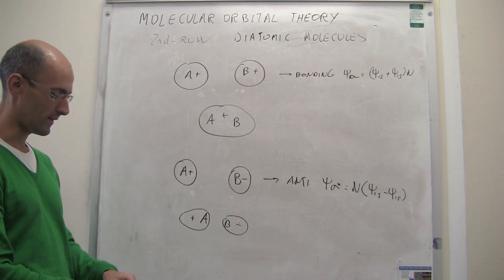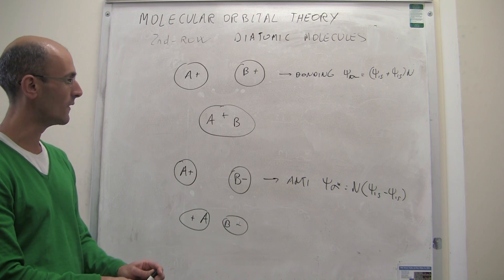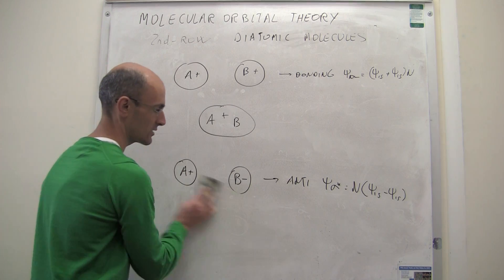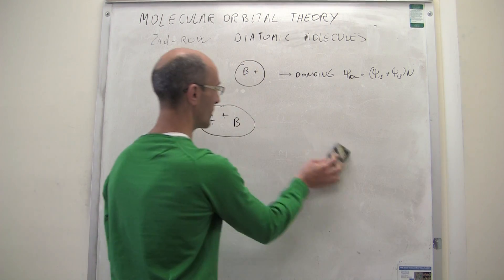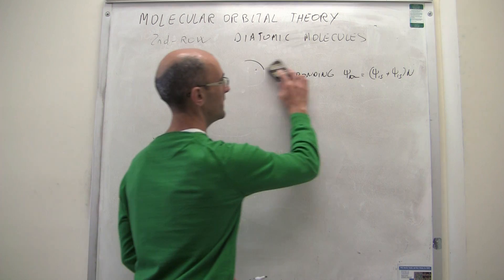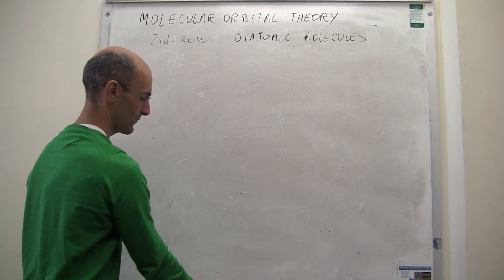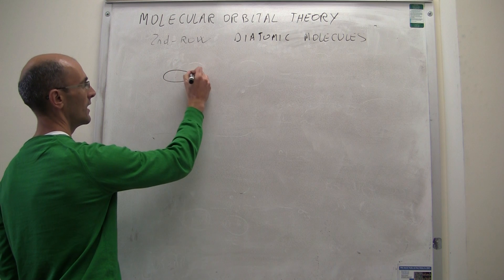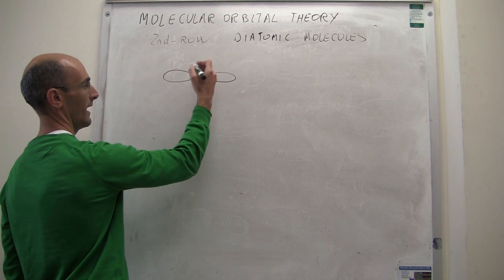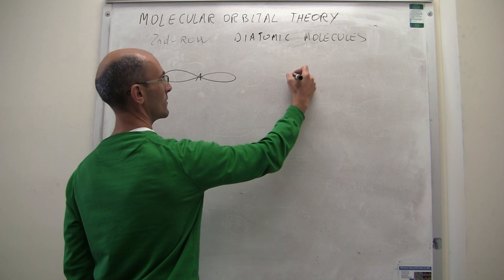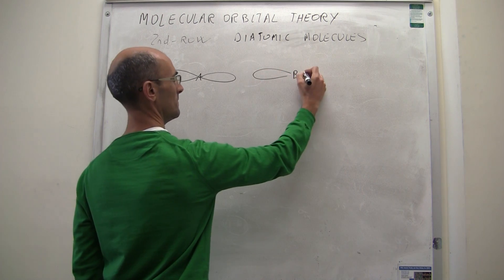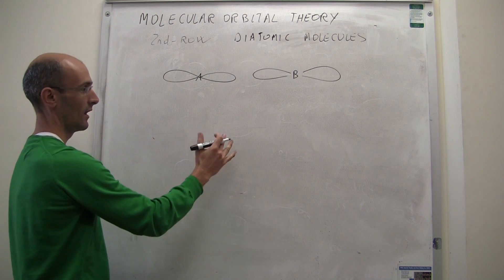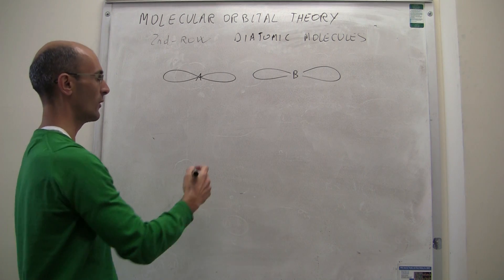That's a quick explanation for how bonding and antibonding orbitals arise from s atomic orbitals. But the question is: what happens when we have p atomic orbitals? Let's see the possibilities. We'll have a regular 2px atomic orbital in atom A and a regular 2p in atom B, and the possibilities are two — constructive or destructive interaction.